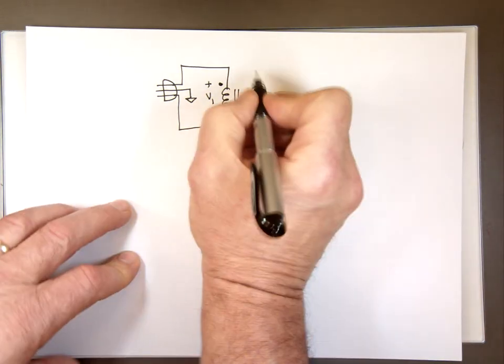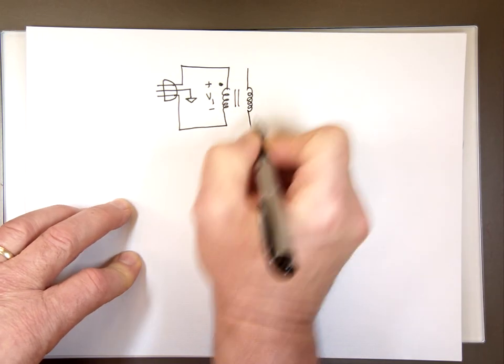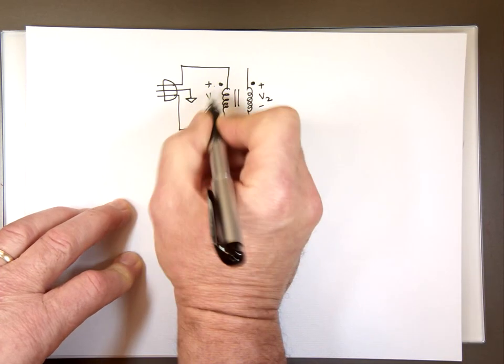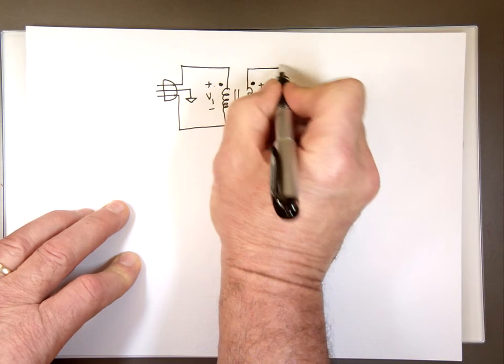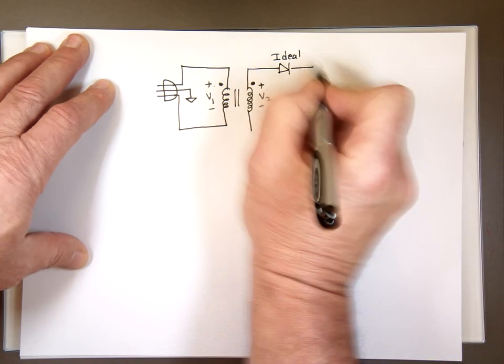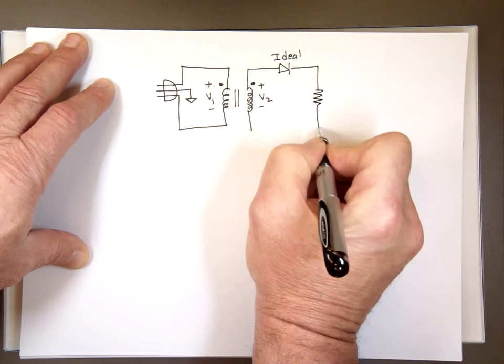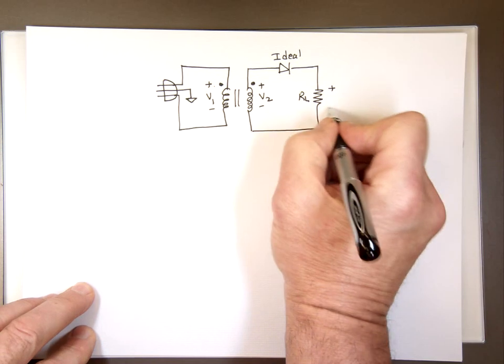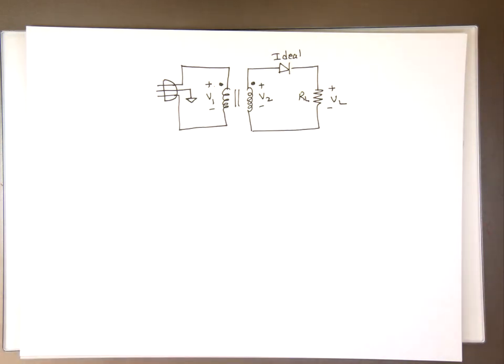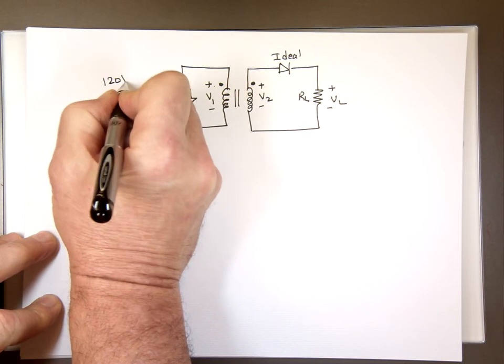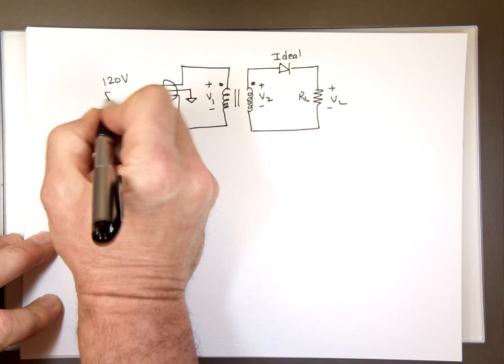And there's my other coil here. Notice the dots have the same polarity—they're both positive. And let me use an ideal diode here, and this is our load RL.